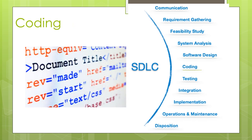The next step is coding, also known as the programming phase. The implementation of software design starts in terms of writing program code in a suitable programming language like C, C++, or Java, and developing error-free, executable programs efficiently.